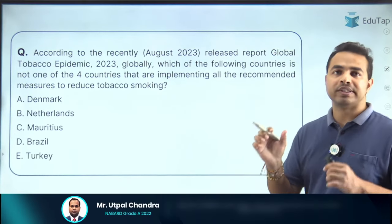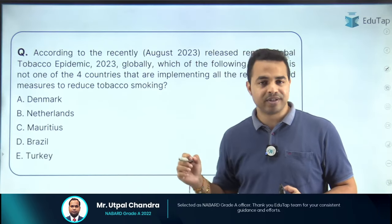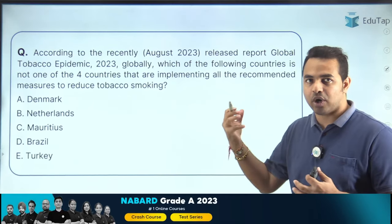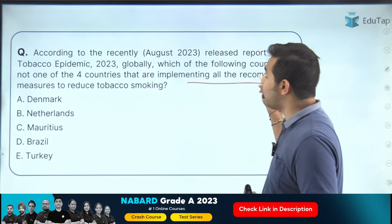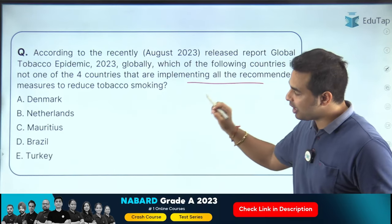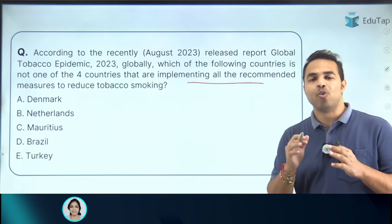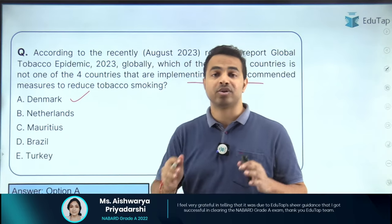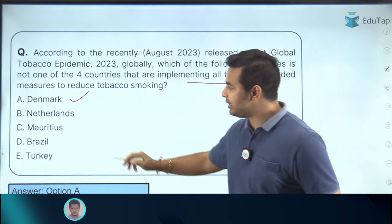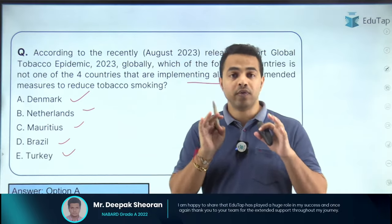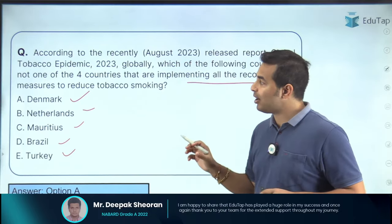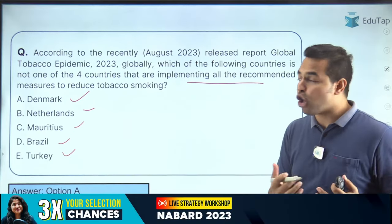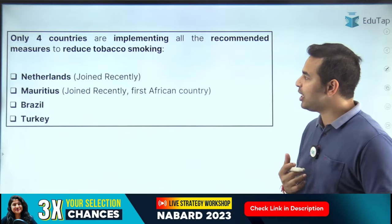The next question is about which country is NOT one of the four countries implementing all recommended tobacco reduction measures. The options are Denmark, Netherlands, Mauritius, Brazil, and Turkey. The right answer is Denmark — Denmark is not part of that group. Netherlands, Mauritius, Brazil, and Turkey are the four countries that have executed all recommended measures to reduce tobacco smoking.